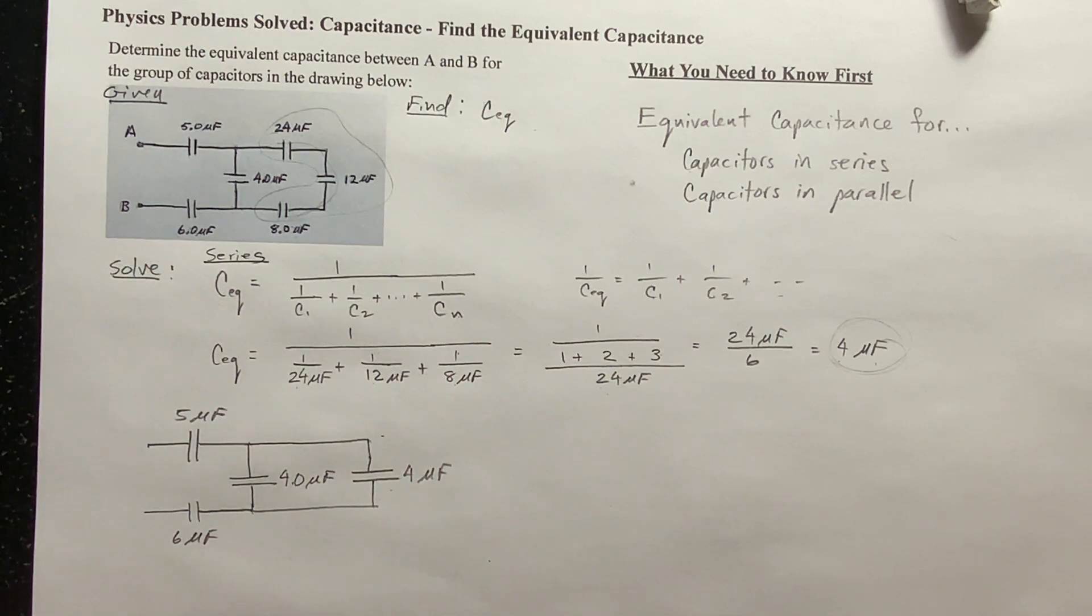So now, we start over again, we just do it over. Look, is there anything in series here? No, branching, no, no, nothing's in series yet. But look at these two. Do you see that they are in parallel?